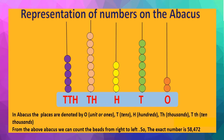Now count the beads of the ten thousands place spike: one, two, three, four, five. So the exact number is 58,472.